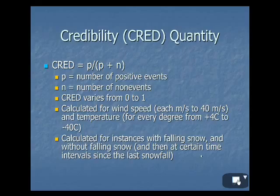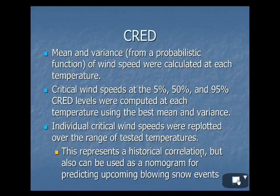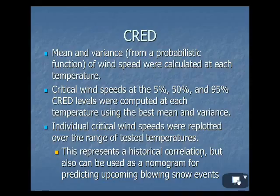This was calculated for every wind speed from zero to 40 meters per second, and for every temperature from plus four Celsius to minus 40 degrees Celsius. They were calculated for instances with falling snow and without falling snow, and for certain time ranges since the last snowfall. From here, a mean and variance was calculated from a probabilistic function of wind speed at each temperature.